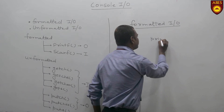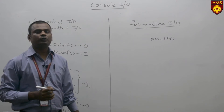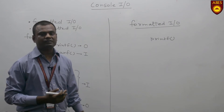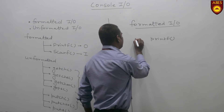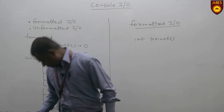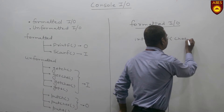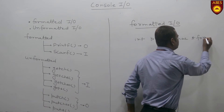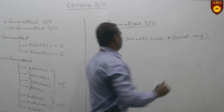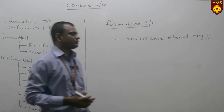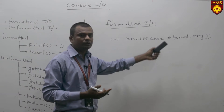In the printf function, there are two components: one is control string and the second one is arguments. The prototype of printf is: int printf(char *format, arguments). It gives the values according to the format.